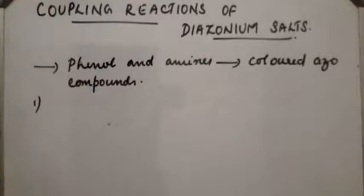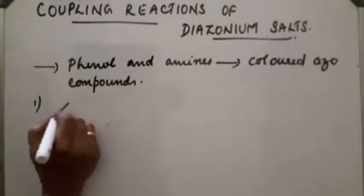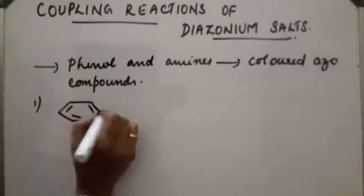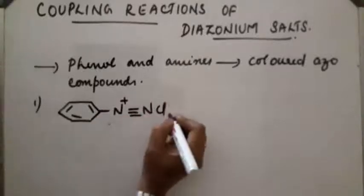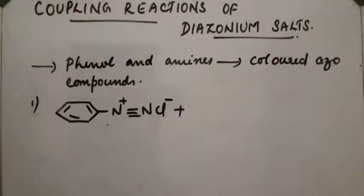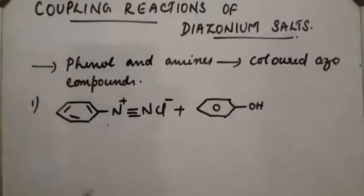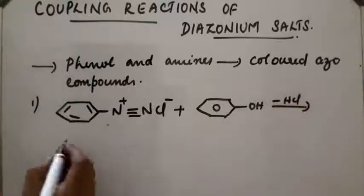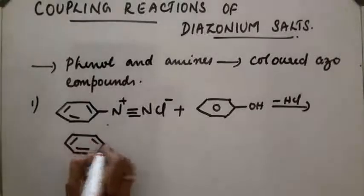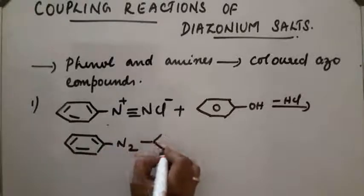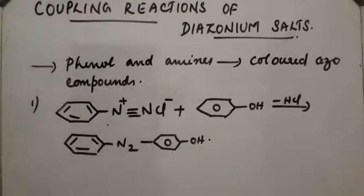First reaction: an ice cold solution of diazonium salt reacts with — couples with — an ice cold solution of phenol in slightly alkaline solution. The coupling reaction takes place with loss of HCl, and the product will be an azo compound containing an N=N-OH group. An azo dye is obtained. This is parahydroxyazobenzene, which is an orange dye.